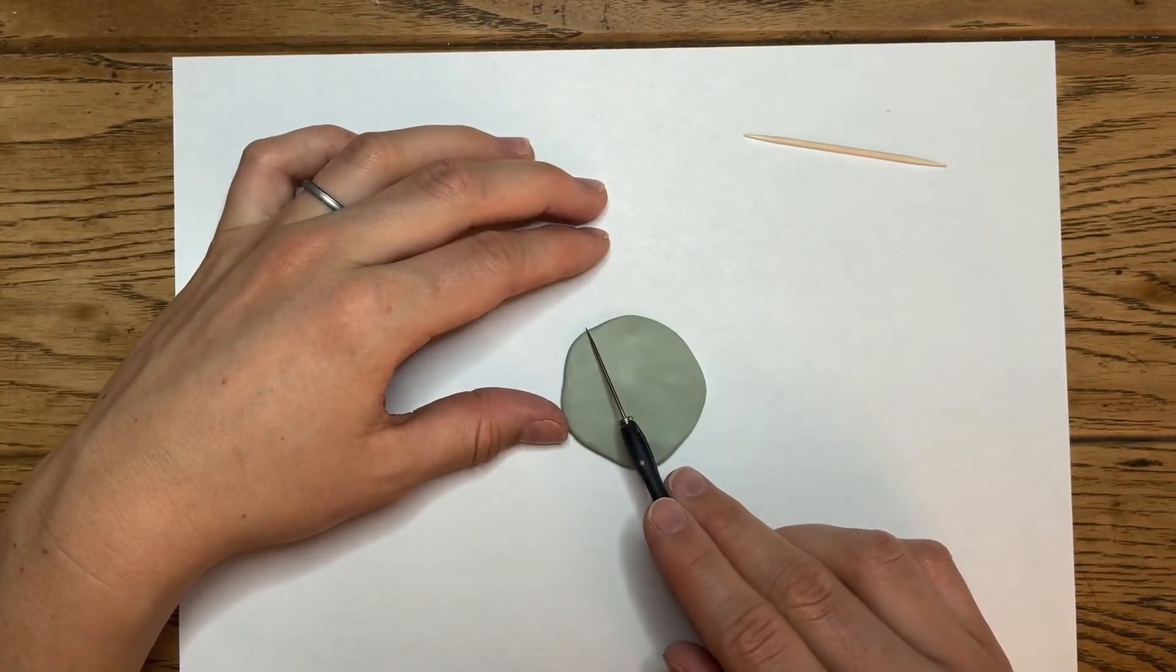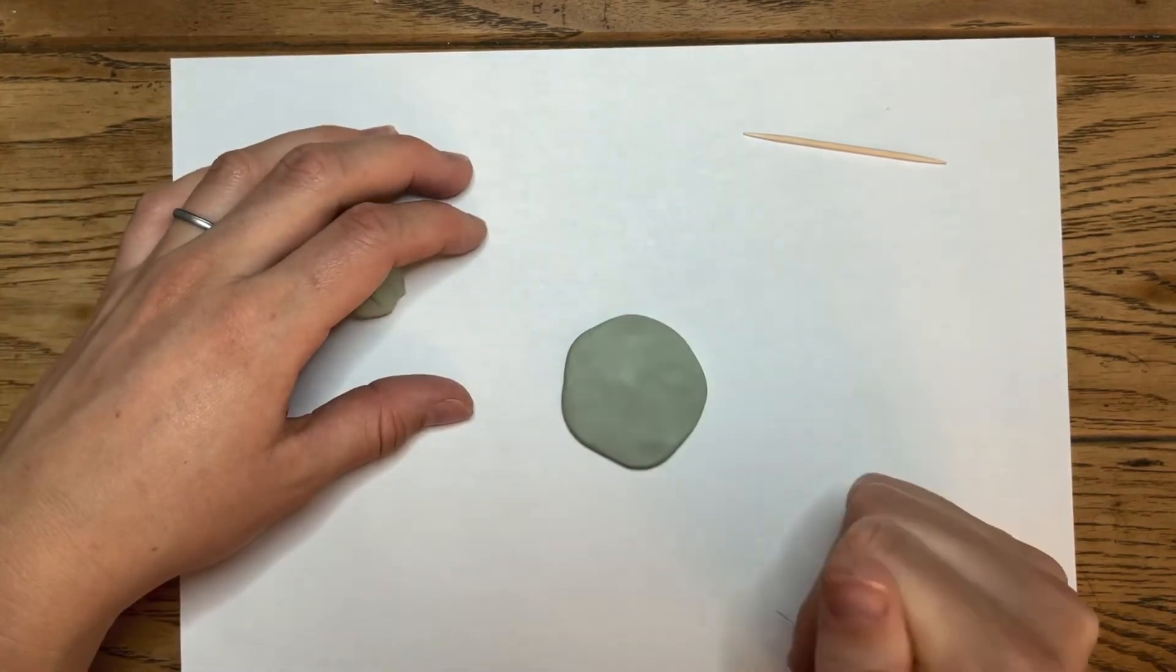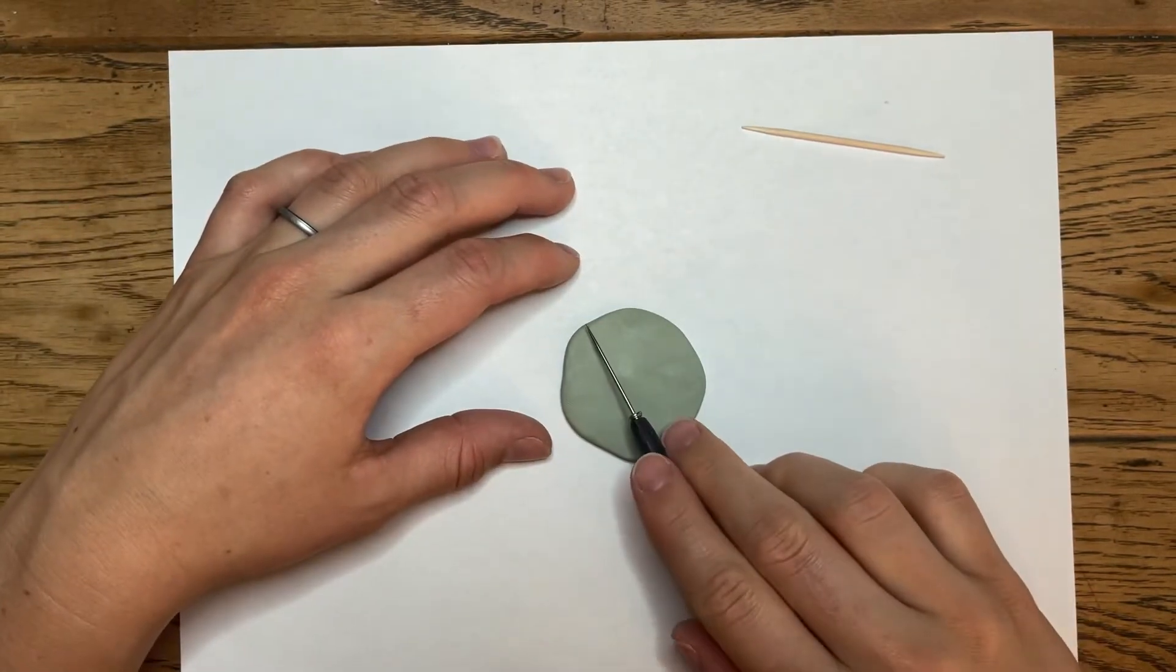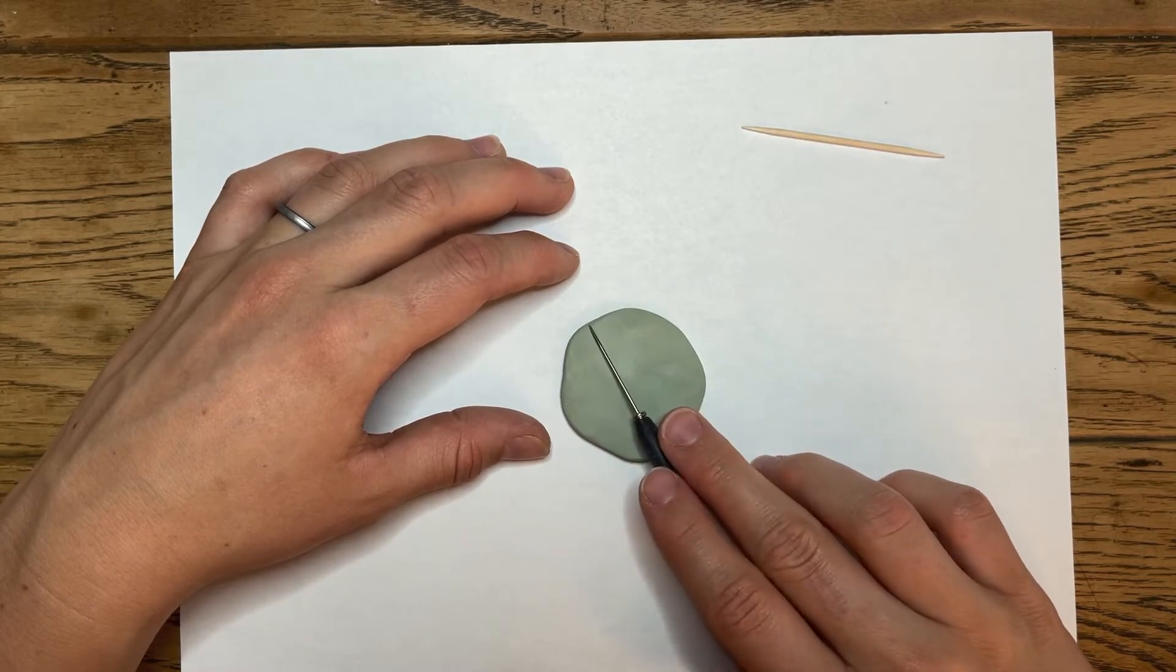Take our potter's needle and make a line. Now the technique for making a line is to not try and draw it out. It's to just slightly press, so press and slightly pull.